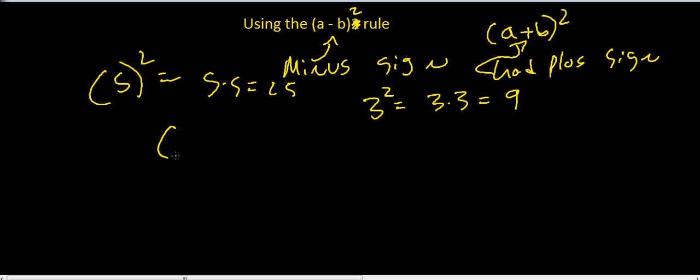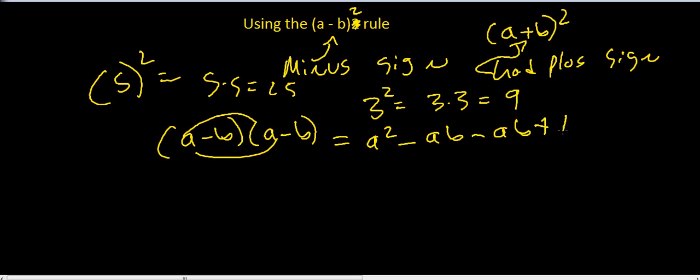So now we got (a-b) times (a-b), which is equal to a squared. You are going to FOIL that first, right? Minus ab, minus ab, plus b squared. a times a is a squared. a times negative b is negative ab. Negative b times a is negative ab. Negative times a negative is a positive. b times b is b squared. Combine your like terms: a squared minus 2ab plus b squared.